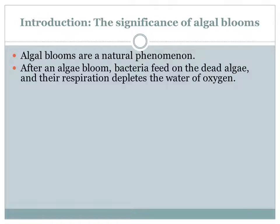Algae blooms are a natural phenomenon. After rapid growth in a population of algae, or an algae bloom, the algae die and are fed on by bacteria, whose respiration then depletes the water of oxygen. If the oxygen is depleted enough, the water can no longer support animals and it is known as a hypoxic zone or a dead zone.